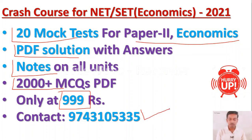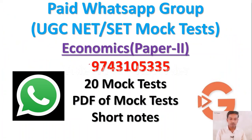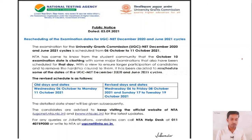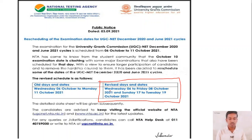You can pay on this number using Google Pay or PhonePay, then send a screenshot and you will be added to the WhatsApp group to receive material via WhatsApp or email. The UGC NTA NET examination revised dates are 6 October to 8 October and 17 October to 19 October 2021. Please remember the revised dates.